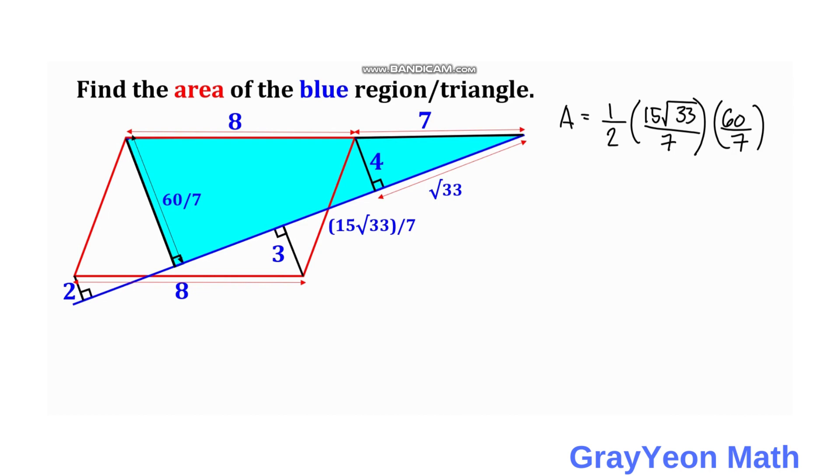So if we simplify this, we have 60 over 2, which is 30. So 30 times 15 is equal to 450 times square root of 33, all over 49 square units. And that is our answer.